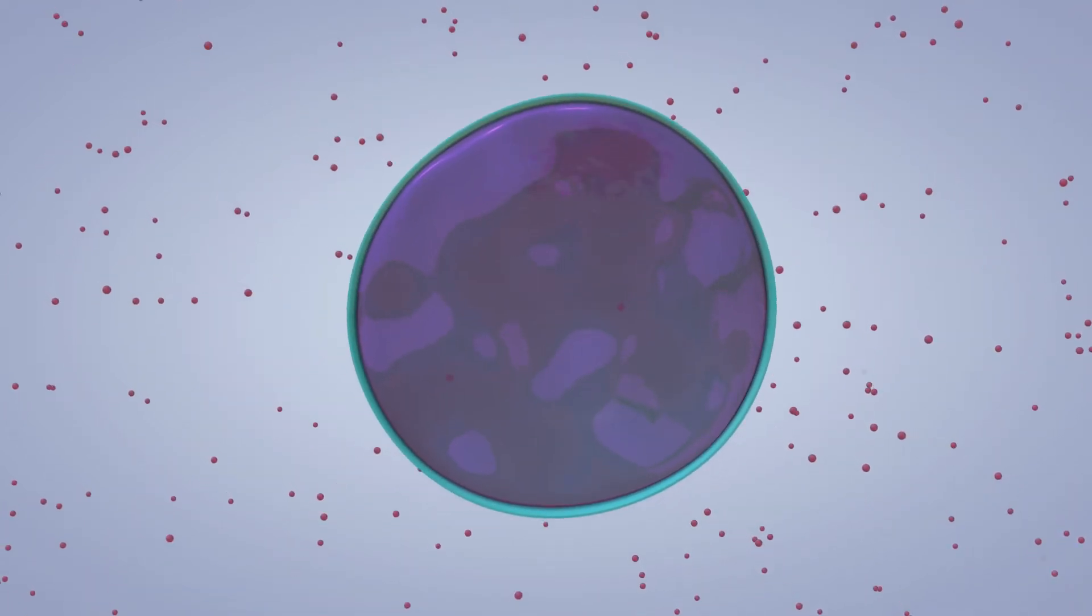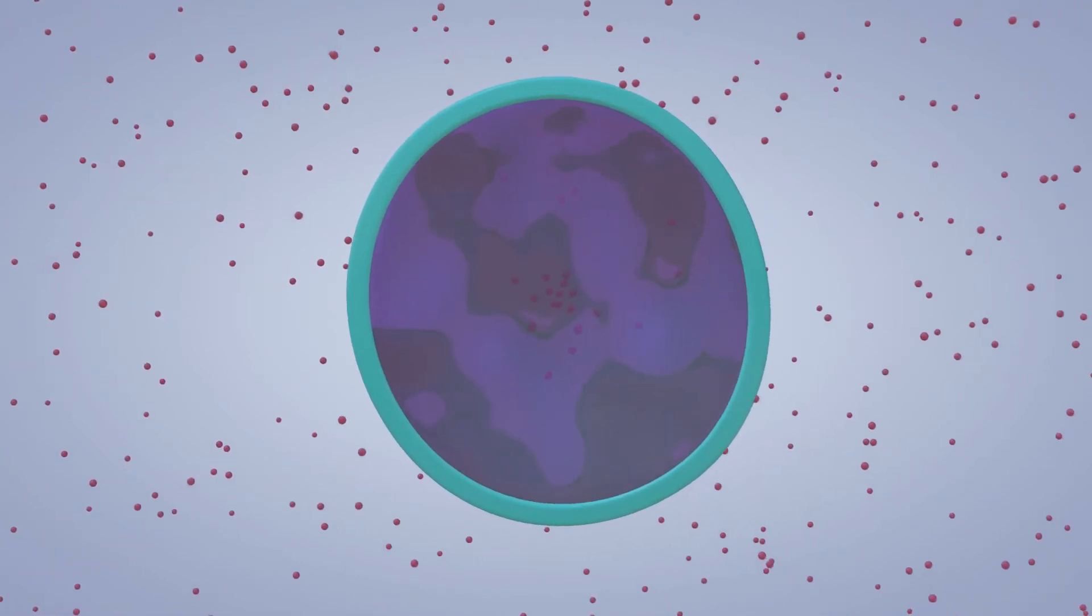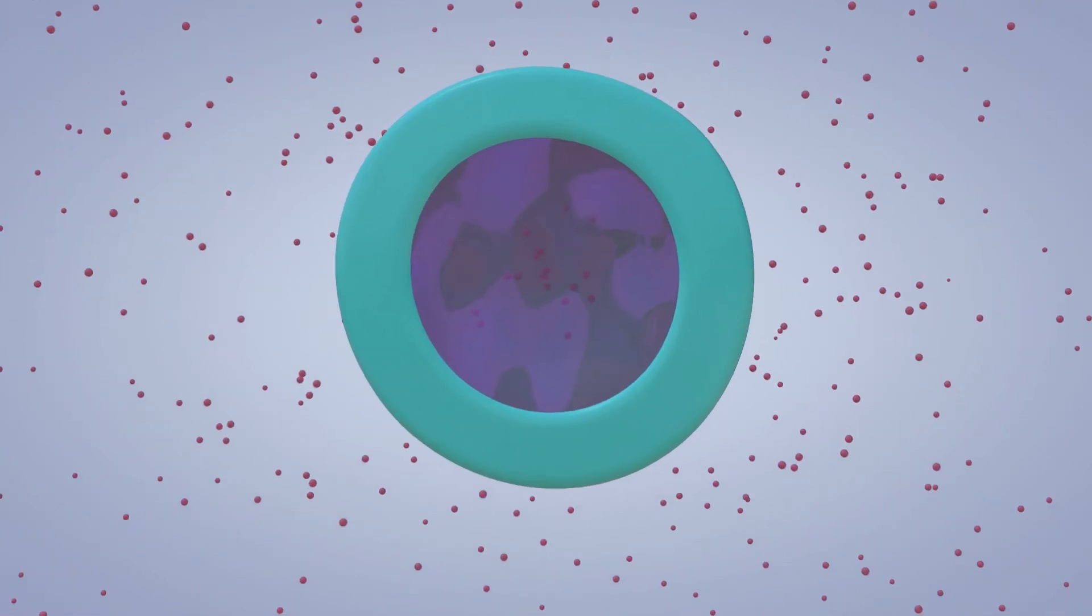The cross-linking occurs from the outside in, because the calcium has to work its way into the inside of the drop of sodium alginate.